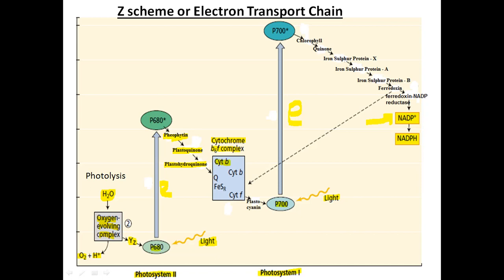Plastoquinone is reduced to plastohydroquinone by receiving electrons, and these electrons are transferred to the cytochrome b6f complex. This complex has several subunits: cytochrome b, cytochrome c, Q-quinone, iron-sulfur protein, and cytochrome f. Electrons from this complex are then transferred to plastocyanin. The empty space left in photosystem 1 — because its electrons were ejected — is filled by electrons arriving from P680.